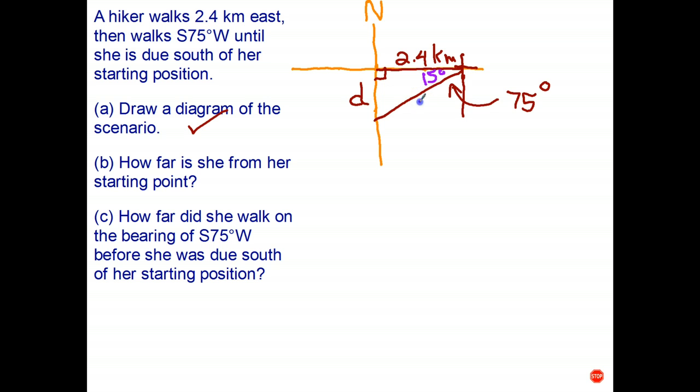So this is the hypotenuse, this is the opposite side, and that's the adjacent side. We're looking for the opposite side. We know the adjacent side. The trig ratio that we want to use is opposite over adjacent, which is tangent.